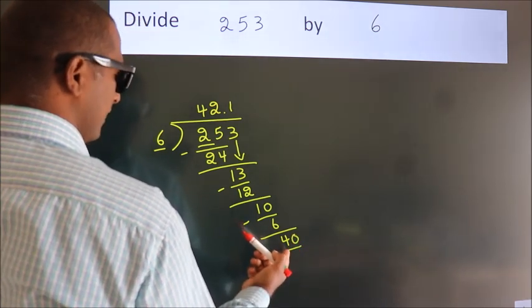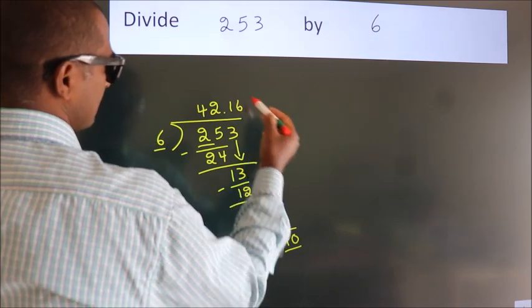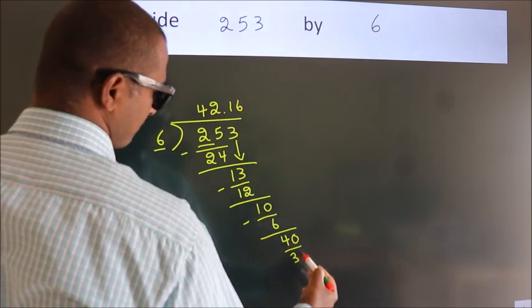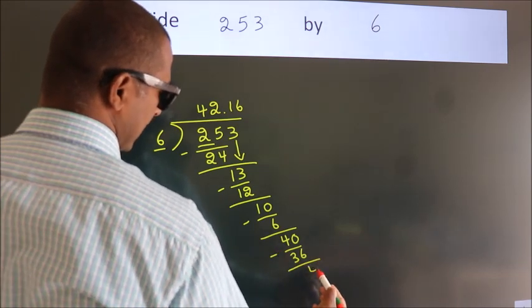A number close to 40 in the 6 times table is 6 times 6, which is 36. Now, we subtract. We get 4.